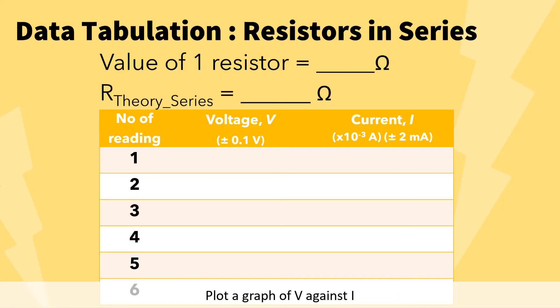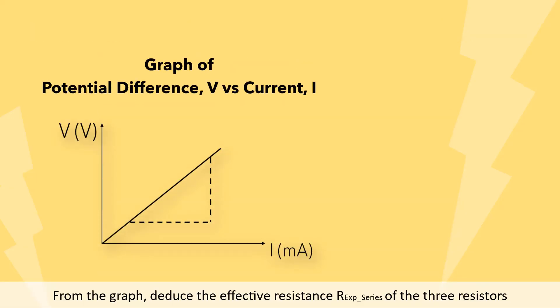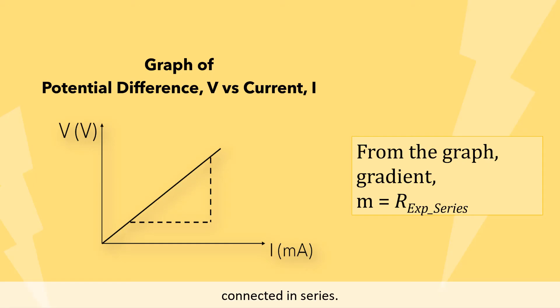Plot a graph of V against I. From the graph, deduce the effective resistance R experiment series of the 3 resistors connected in series.